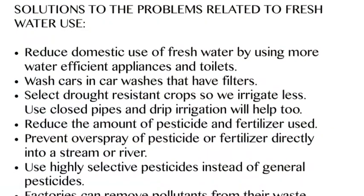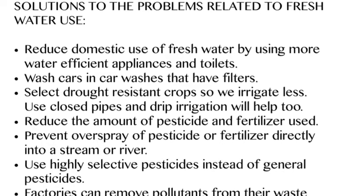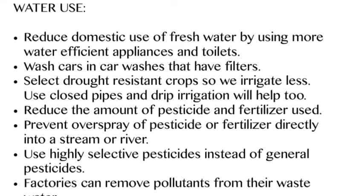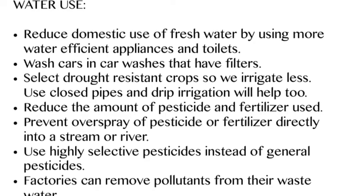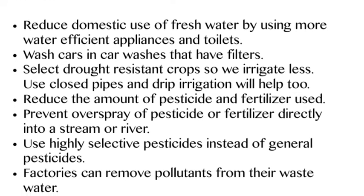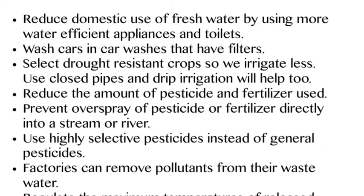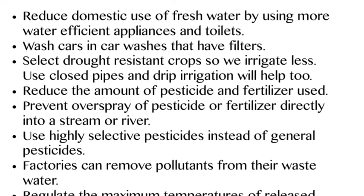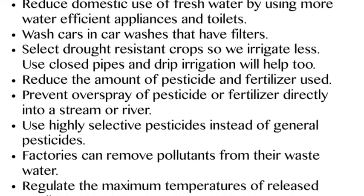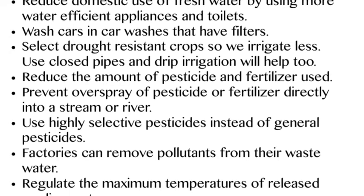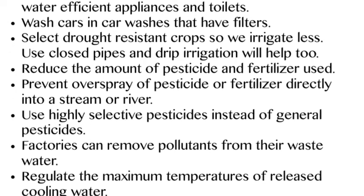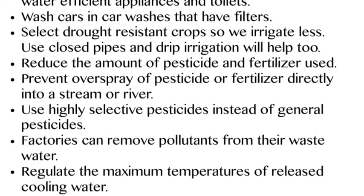So how do we fix these problems? We have to use more water-efficient appliances and toilets. If you wash your car, do it at a car wash with filters that filter out soaps. Select drought-resistant crops, and when you irrigate those crops, use closed pipes and drip irrigation instead of sprinklers — sprinklers are very inefficient since most of the water evaporates.